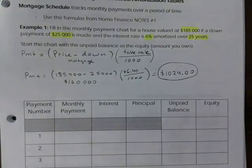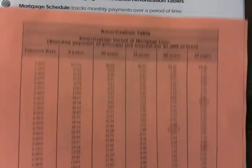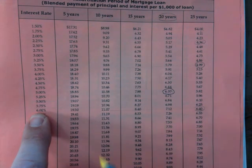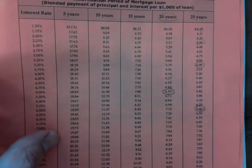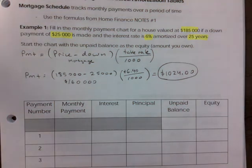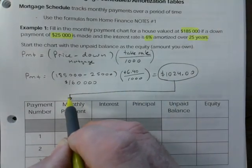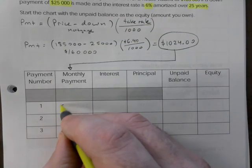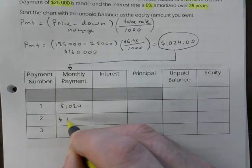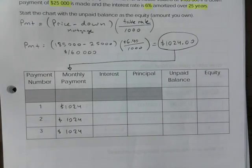In case you missed it: where does that 6.40 come from? I matched six percent on the table with 25 years, and that gave me 6.40. So the payment is $1,024. You plug that into the payment column — every single month you're going to make the same payment, it's not going to change. If you want full marks on these, make sure you have dollar signs on every single cell.